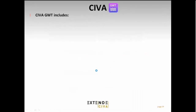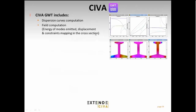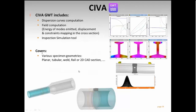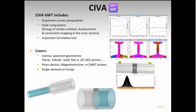A few words on the guided wave module. No major new features in SIVA 2017 for this module, but it allows computing dispersion curves in various components, computing fields in a cross-section — for example in a pipe or rail track — and simulating defect responses. It covers planar, tubular, and rail specimen geometries with different transducer technologies: piezo, magnetostrictive, and EMAT, for single element or array probes, typically for pipe inspections.